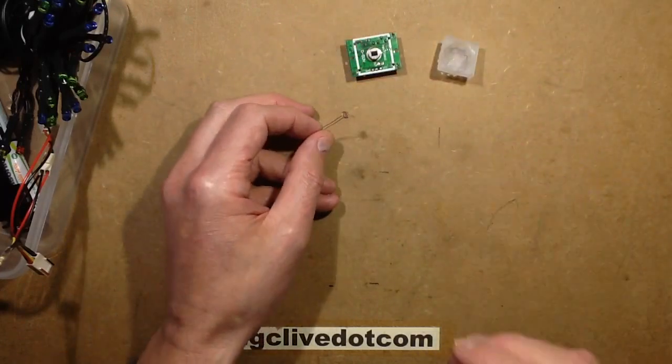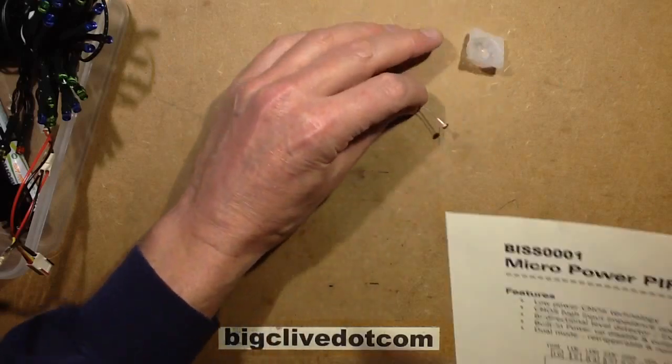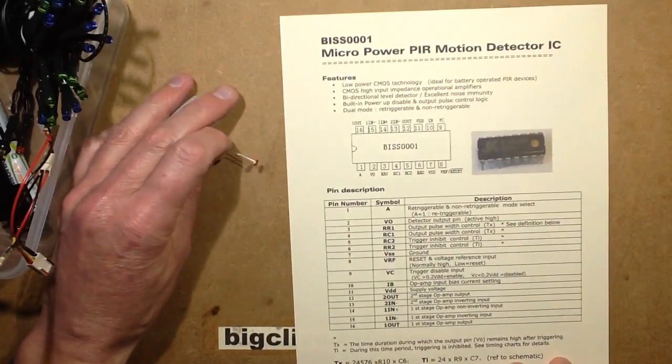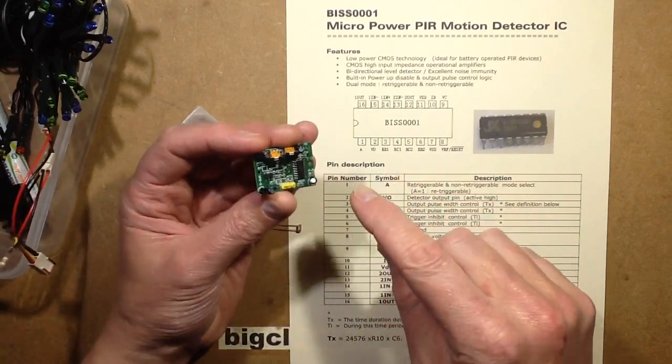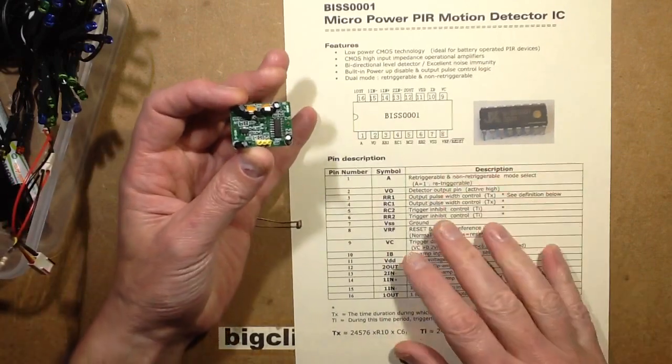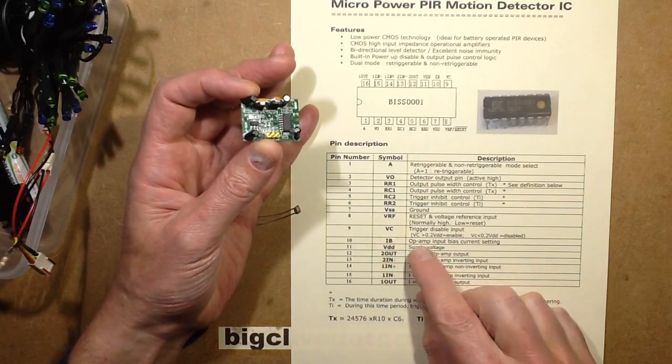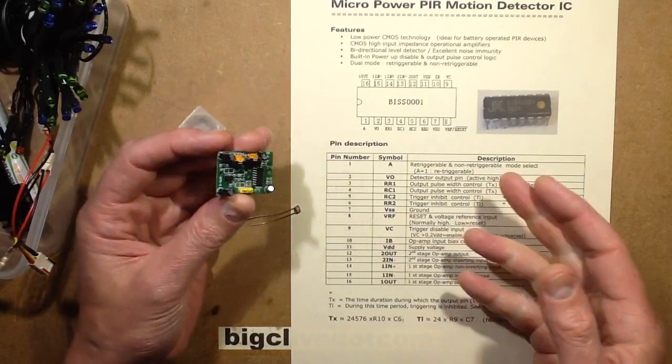If I can find the paperwork regarding this. So here is the data sheet, well part of the data sheet for the BISS0001 chip, which is a very common chip. It's got an input in pin number 9, VC trigger-disable input. Basically speaking, if that pin voltage goes above 0.2 volts it enables it, but if it goes below 0.2 volts it's disabled.